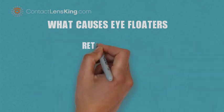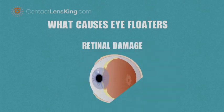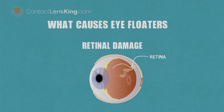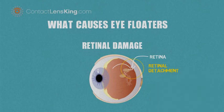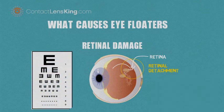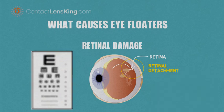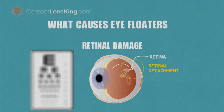Retinal damage. A damaged retina could potentially be another possible cause of eye floaters. If the naturally occurring liquid in the eye clumps up and causes the vitreous sac to pull on the retina, it could cause fluid to accumulate behind it, increasing the probability of a potential retinal detachment. Such a condition can impact a person's overall vision, and even cause permanent vision loss if left untreated.